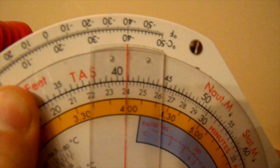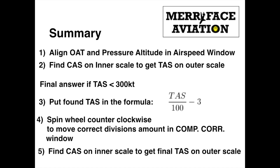Let's summarize the method in a few bullet points. Step 1: Align the outside air temperature and flight level in the airspeed window. Step 2: Find the given CAS on the inner scale and from there find TAS on the outer scale. If TAS at this point is less than 300 knots, you have finished the question — otherwise, continue to step 3. Step 3: Divide the found TAS by 100 and subtract 3 from it. Step 4: Move the wheel counterclockwise so that the compressibility factor in the COMP CORR window moves by the number of divisions calculated in step 3. Step 5: Look once more at the CAS on the inner scale and find the final value of TAS on the outer scale.